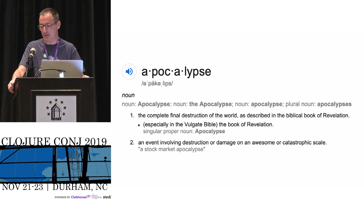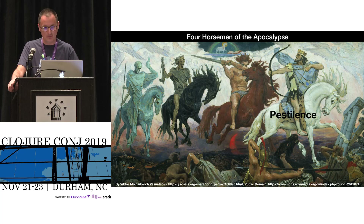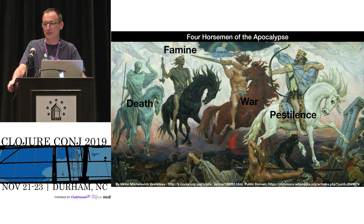In the Revelation account of the apocalypse, there are four horsemen: pestilence, war, famine, and death. They are the harbingers of doom — they bring about the end of the world and total destruction.